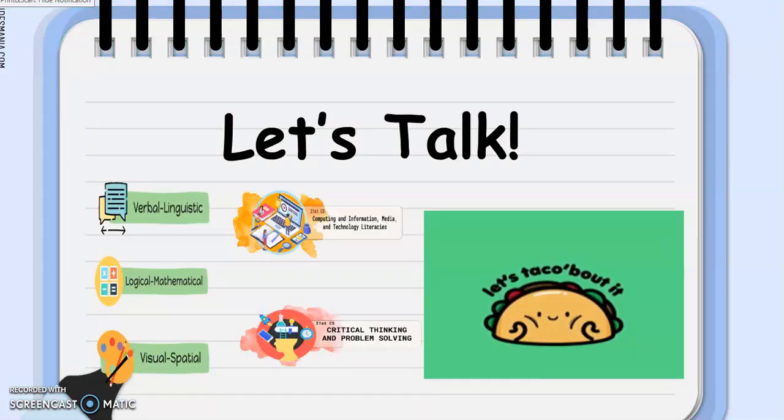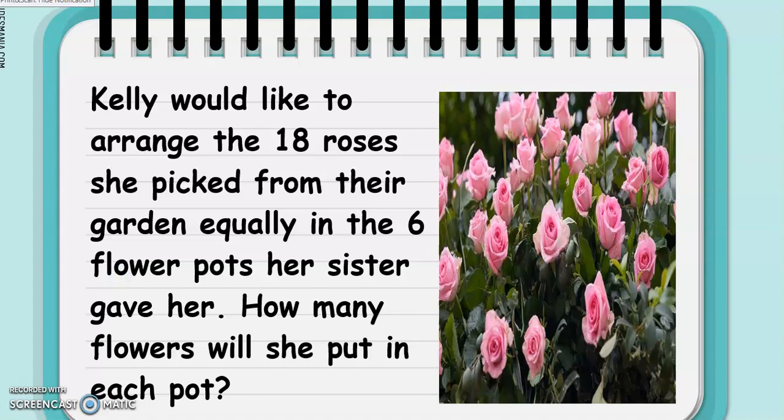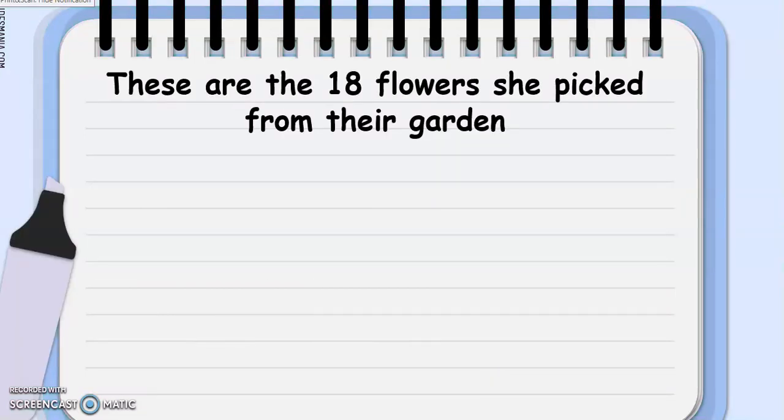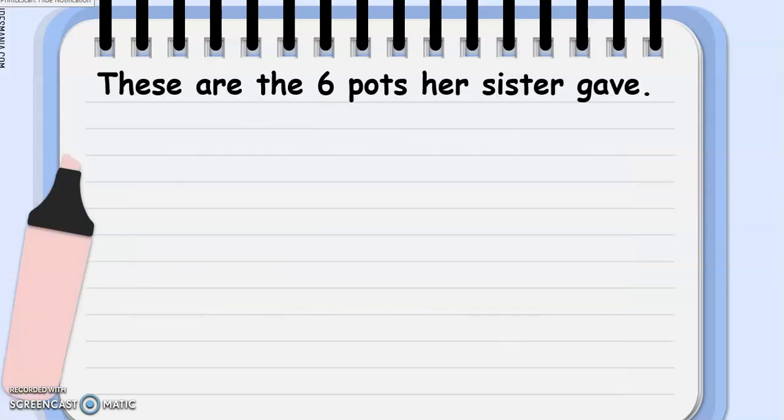Now, let's start with our Let's Talk. So, Kelly would like to arrange the 18 roses she picked from their garden equally in the six flower pots her sister gave her. How many flowers will she put in each pot? Now, these are the 18 flowers she picked from their garden. These are the 18 flowers. And these are the six pots her sister gave.